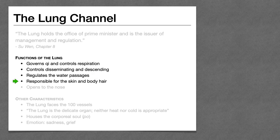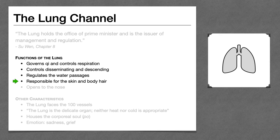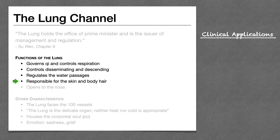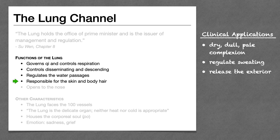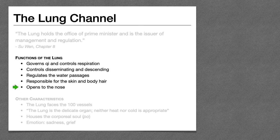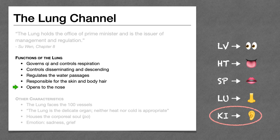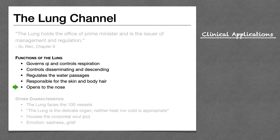The lung is responsible for the skin and body hair. The lung is supposed to diffuse Qi and fluids outwards to the surface, keeping the skin healthy and moist. If the lung is deficient, we may see a dry, dull, pale complexion. Importantly, when we say the lung governs the skin, we also mean it controls the opening and closing of the pores — the lung diffuses Qi outward into the cou-li spaces — so we can use points on the lung channel to regulate sweating and to release the exterior in the case of an external attack. Each organ opens to an orifice; the lung opens to the nose, so certain points along the lung channel are good for nasal congestion and sinus problems.